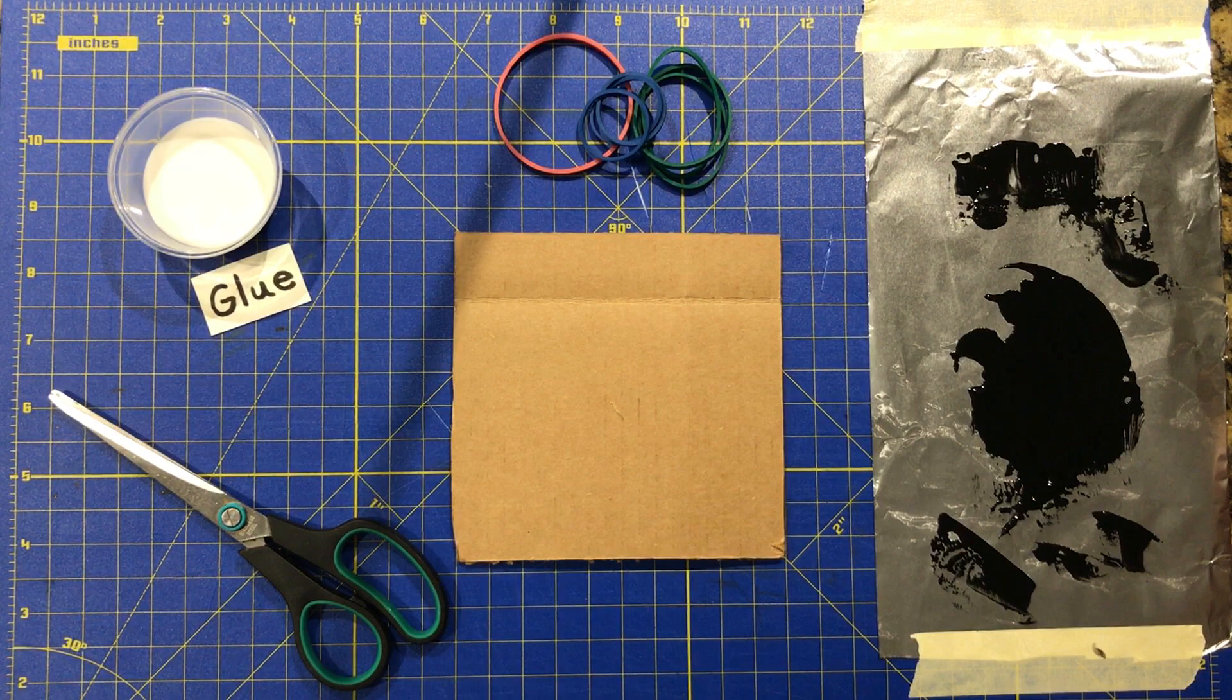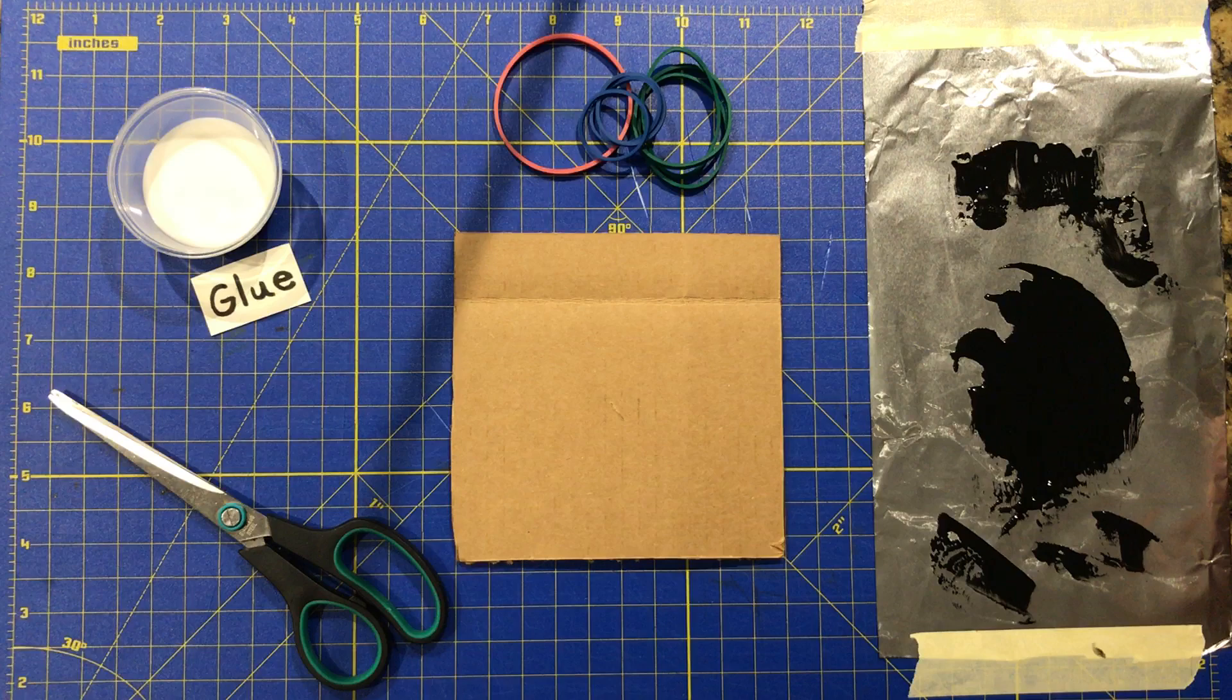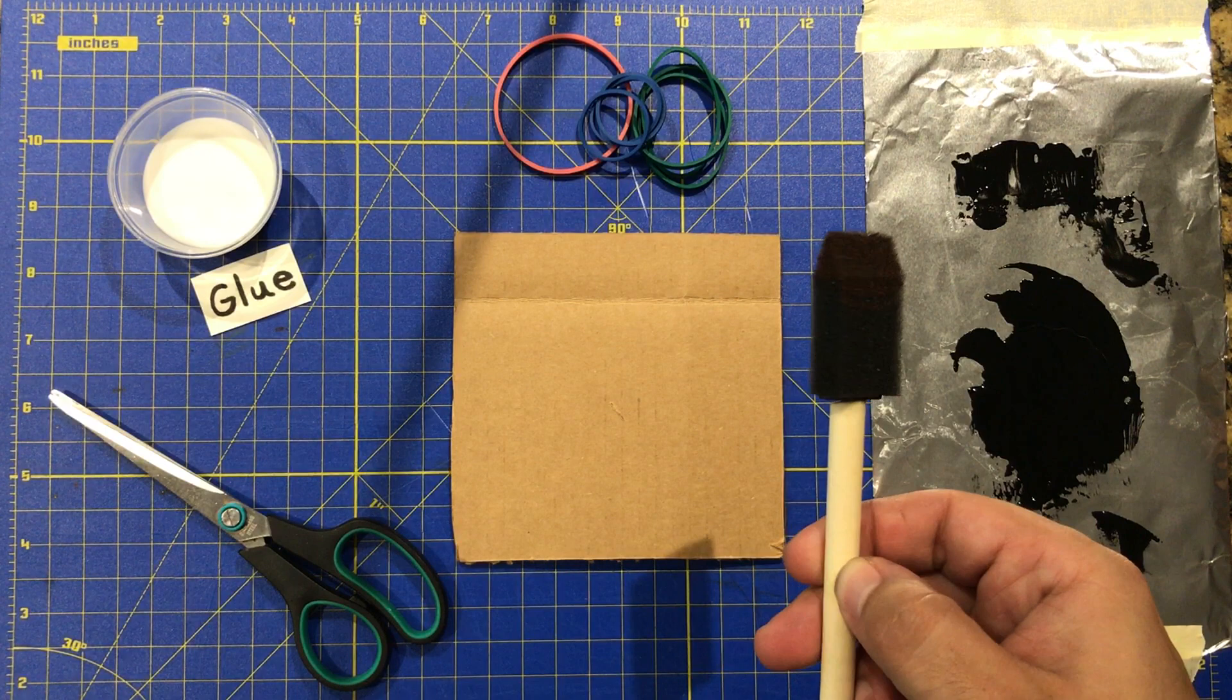Afterwards, you'll need some type of paint or ink. This is printmakers ink that I'm using with a brayer, but you could also use a foam brush and some water soluble paint.